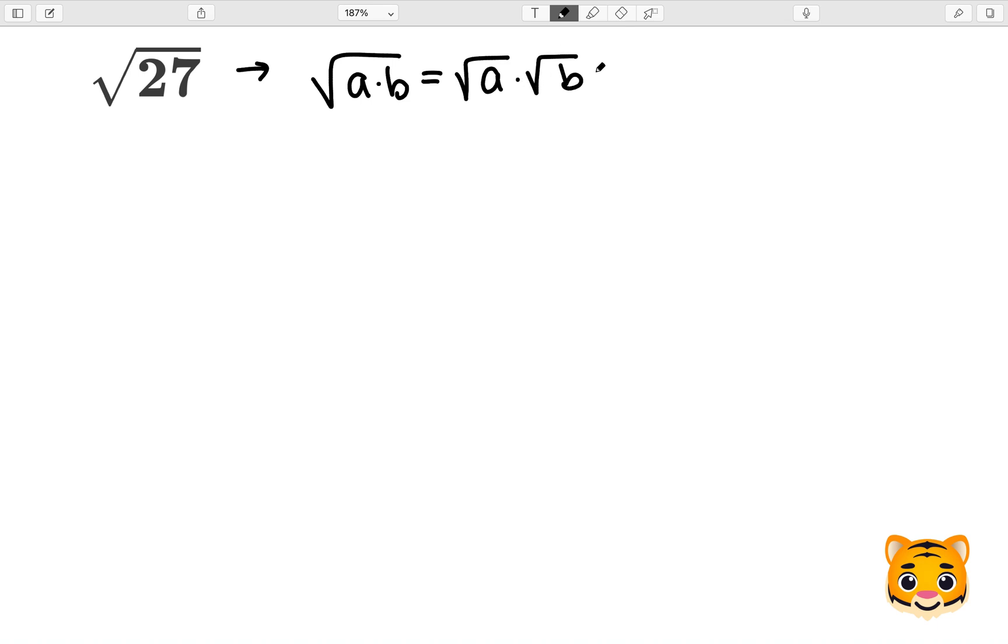This means if we have two numbers multiplied by each other inside of a square root, we can move them and separate them out and multiply them together.